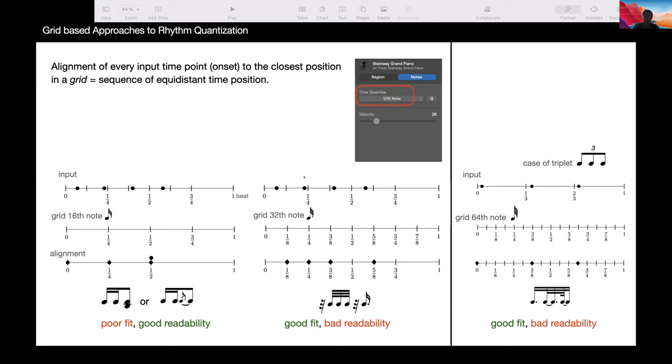If you want to obtain more precise output, we can use a more precise grid, like 32 notes. We obtain a more precise output, but the notation is also not so easy to read. In particular, we have this small rest added here because of the shift of the first note at the beginning.